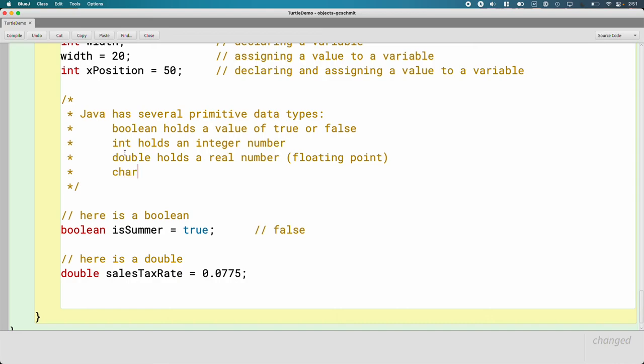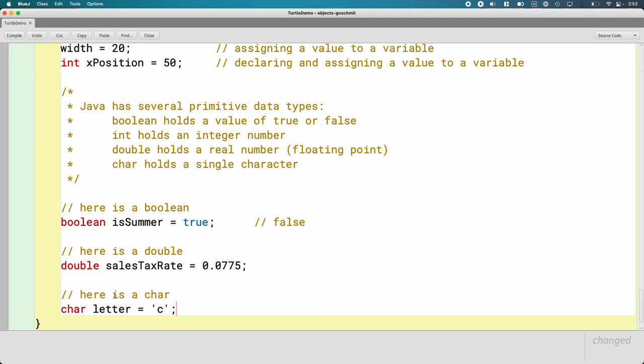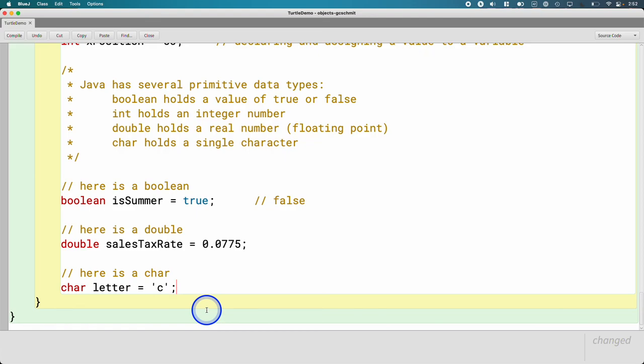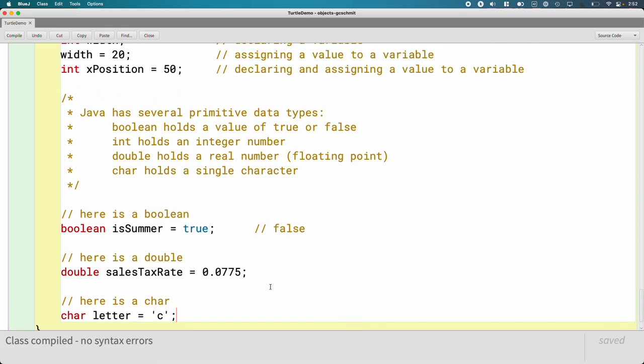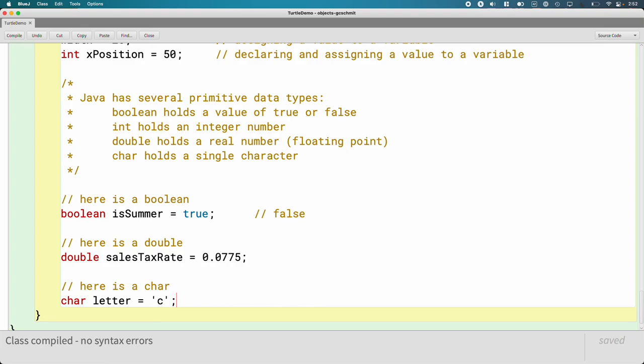We will from time to time use a char, which is short for character. And it holds a single character. It is not a string. It holds literally one single character. So here is a char. Char letter equals C. When we're trying to specify a specific character, like literally the letter C, we will put it in single quotes. So single quotes for single characters. We're going to use double quotes later for strings. Java doesn't let you mix the two at all. So here is a char.